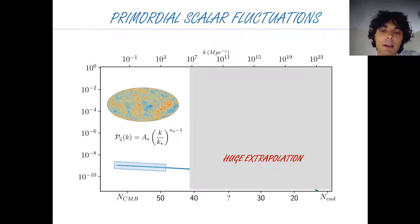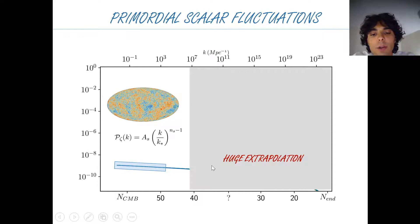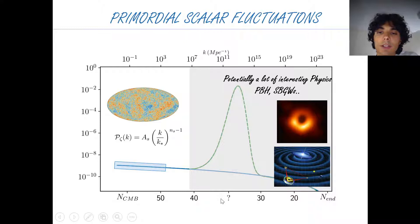One of the key successes of inflation is that it can provide an almost scale-invariant power spectrum for the curvature fluctuation, which explains the temperature anisotropy in the cosmic microwave background. What CMB observations constrain is the power spectrum over a limited range of scales, and assuming it continues to behave this way up to arbitrarily small scales can be seen as a huge extrapolation. One might wonder about some enhancement of the curvature fluctuation due to dynamics at a later stage during inflation.